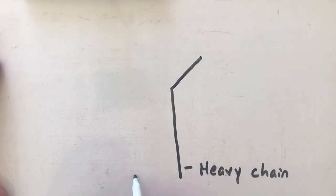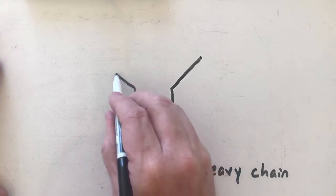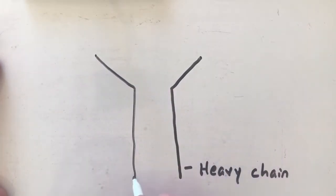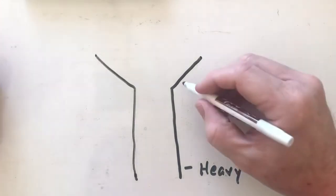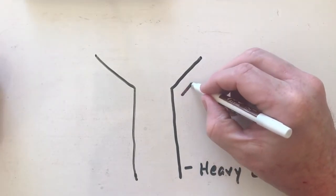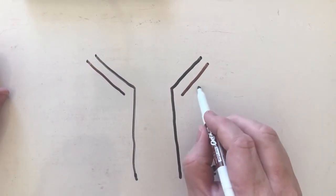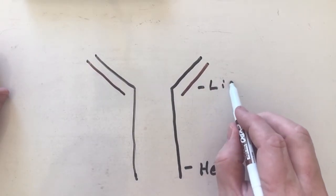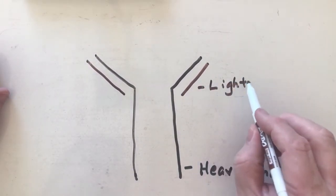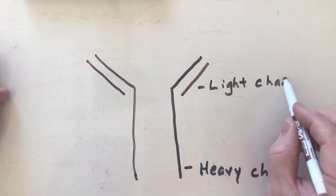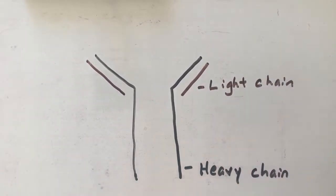You're going to have two heavy chains. Then what you're going to have is something called a light chain. If you look at the difference, you can tell that the light chain is shorter than the heavy chain, and that's probably why it's called light—it's just lighter.